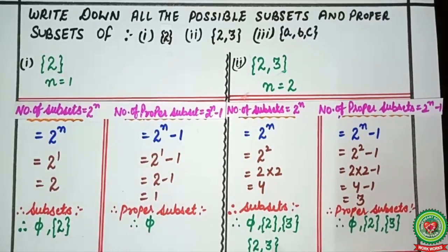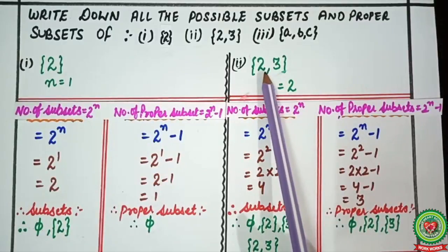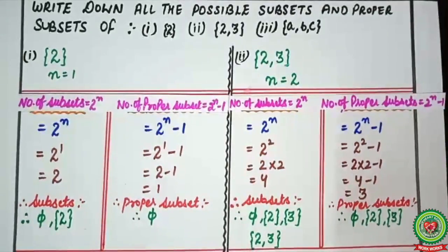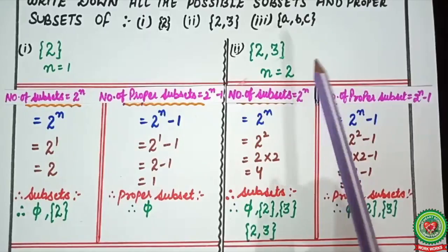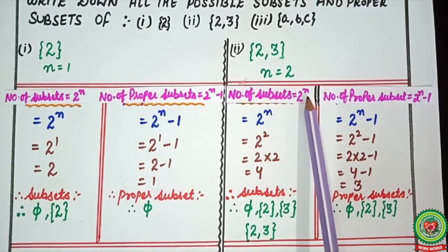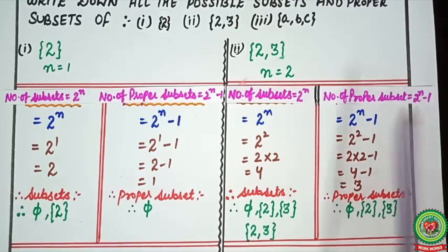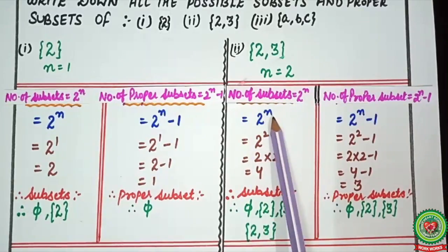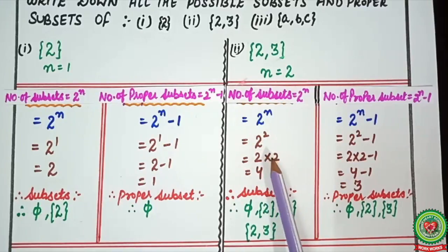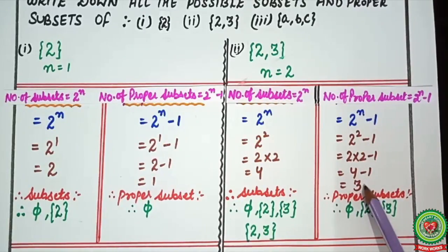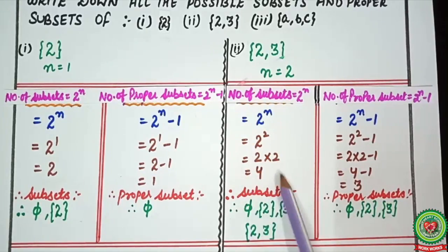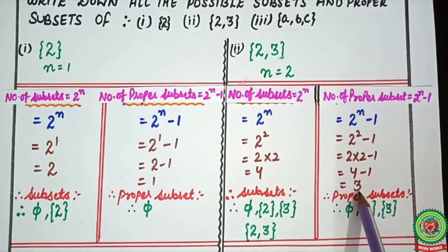Moving to the next example: the set {2, 3} has 2 elements, so n = 2. The formula gives: number of subsets = 2^2 = 4. For proper subsets: 2^2 − 1 = 4 − 1 = 3. Again, you can notice that the proper subsets are always 1 less than the total subsets.